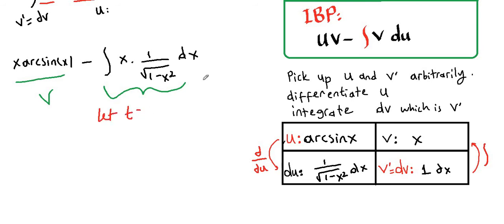Let t be equal to 1 minus x squared. Then dt will be derivative of 1 minus x squared, which is negative 2x dx. And if you solve for dx here, dx will be equal to negative dt over 2x.